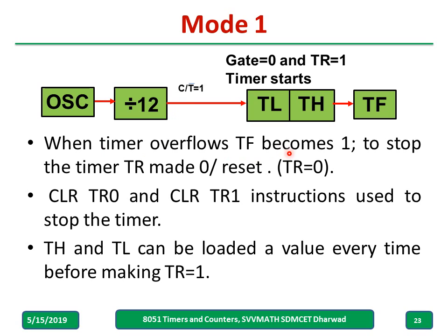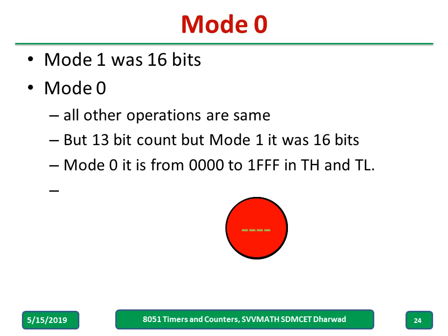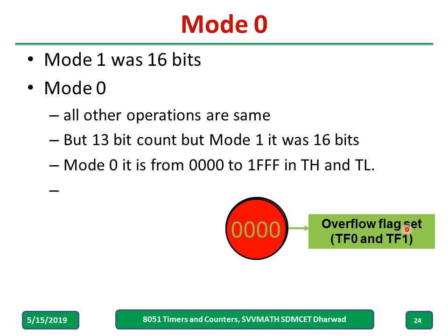In Mode 2, when the timer overflows TF becomes 1. TH and TL can be loaded with any value before starting the timer. In Mode 0, all operations are the same as Mode 1 except the count is 13-bit instead of 16-bit. The count starts from all zeros up to the 13-bit maximum (not all 16 ones). After the 13-bit maximum, overflow occurs, the flag is set, and the count returns to 0.